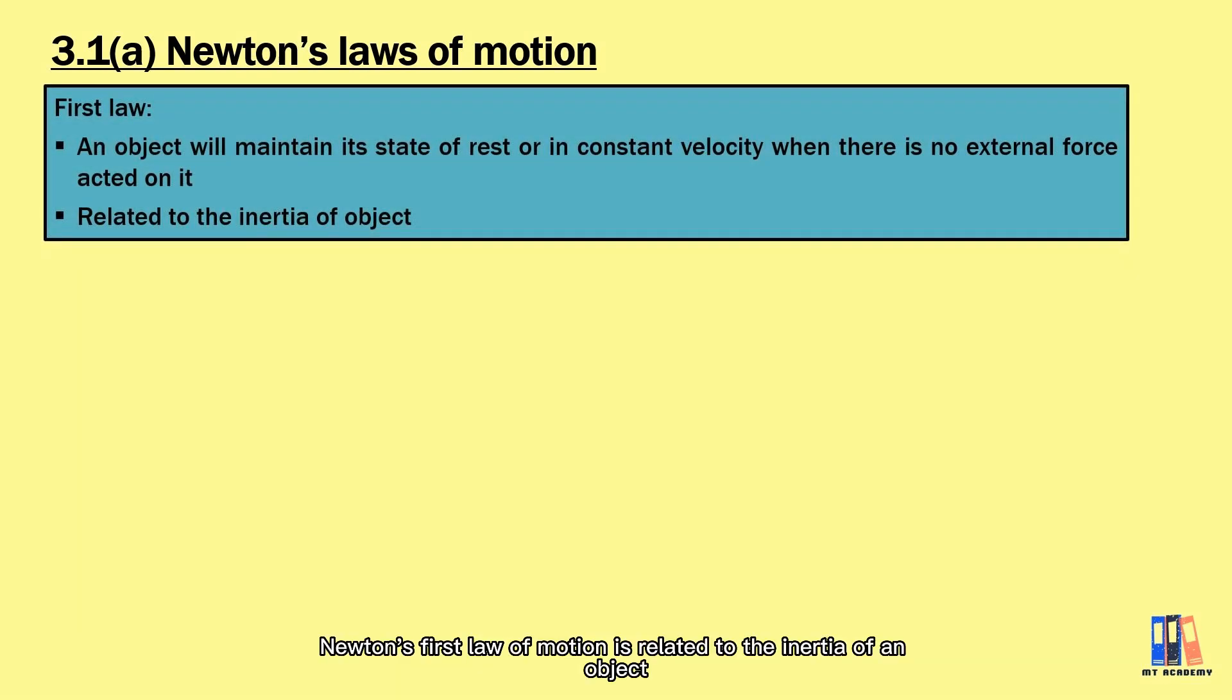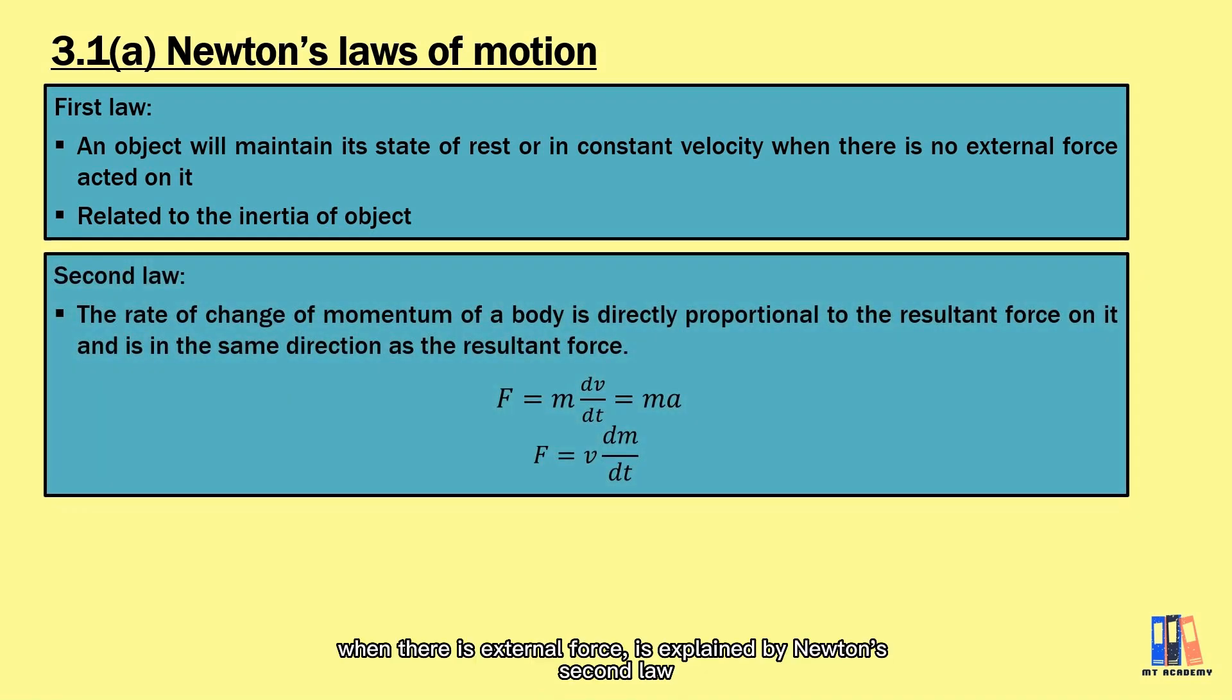Newton's first law of motion is related to the inertia of an object. It states that an object will continue to rest or move in constant velocity when there is no external force. What happens when there is external force is explained by Newton's second law: the object will experience change in momentum.